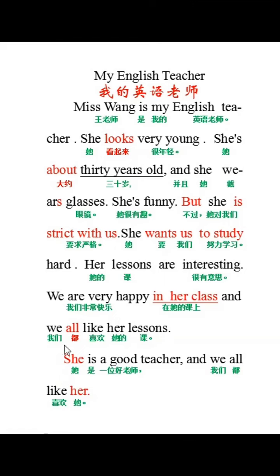这里边有两个她：She is，主格的人称代词，放在谓语动词的前面做主语；her 是宾格的人称代词，放在动词的后面做宾语。你学会了吗？